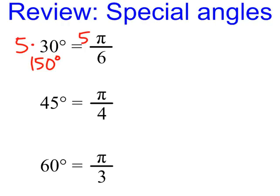Likewise, I'm bringing into the picture 90 degrees, which is π over 2 radians, and 180 degrees, which is π radians. I'm going to call those angles and all their multiples special angles as well.